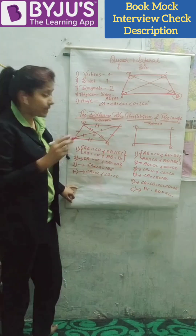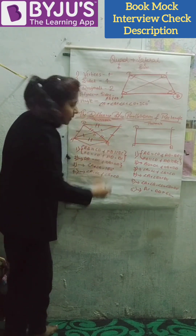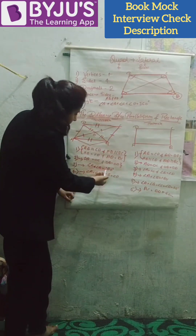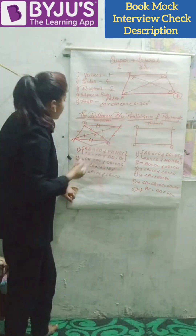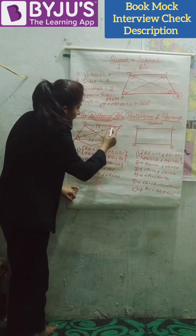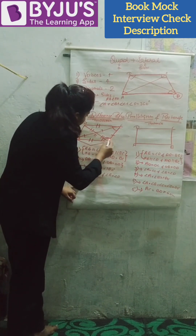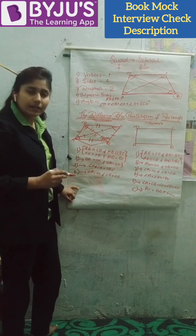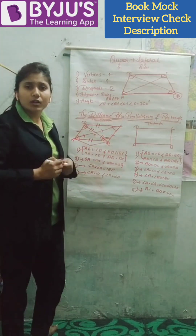Third property is that adjacent angles are supplementary. That means angle A plus angle B equals 180 degrees. And the last property is that opposite angles are equal. So angle A equals angle C, and angle B equals angle D.